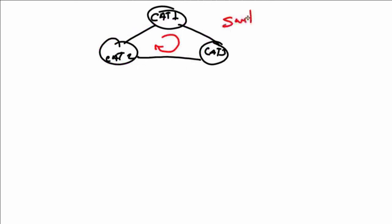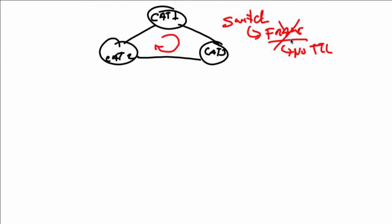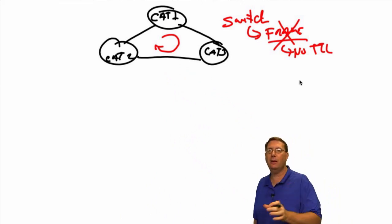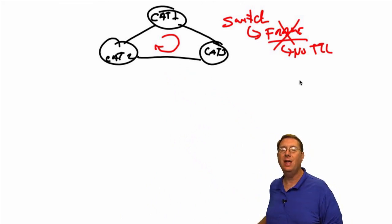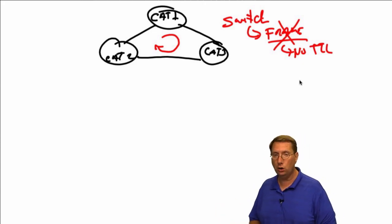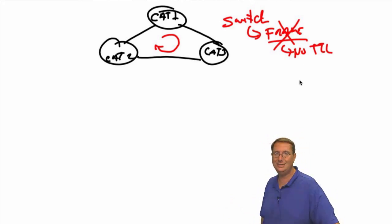Remember, we're talking about switches. Switches use frames for communicating information at Layer 2, and frames have no TTL. Time to live does not exist in the context of a frame. So it is entirely possible that we can accidentally create looped scenarios where frames are going to constantly be replicated and flooded ad infinitum. This can cause a problem called a broadcast storm.